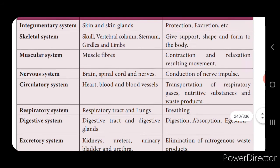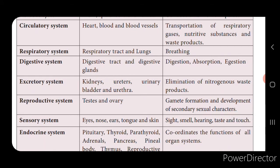The respiratory system consists of the respiratory tract and lungs, and its main function is breathing. The digestive system consists of the alimentary canal and digestive glands, and its function is digestion, absorption, and elimination. The excretory system involves the kidneys, ureter, urinary bladder, and urethra, for removal of nitrogenous waste. The reproductive system consists of the testes and ovaries — testes are part of the male reproductive system and ovaries part of the female — and it is involved in gamete formation and reproduction.